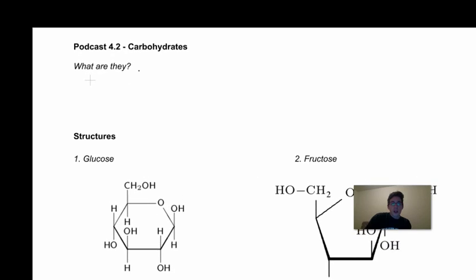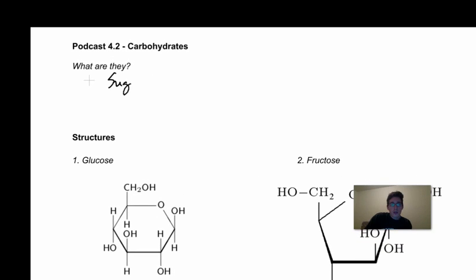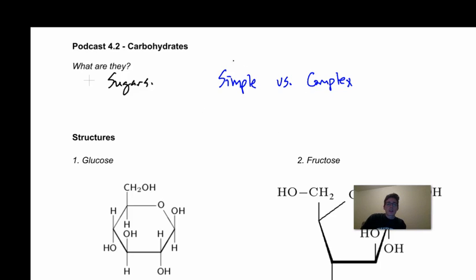In short, carbohydrates are sugars. Anytime you eat sugars, you are eating a carbohydrate. We have simple sugars and there are also complex sugars. We're not going to get into simple versus complex today, because this has to deal with the type of polymer that they're a part of. Sugars are all around you and you need them to survive.